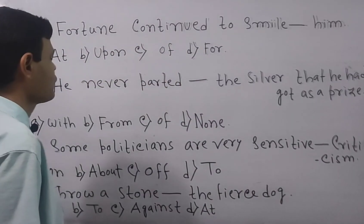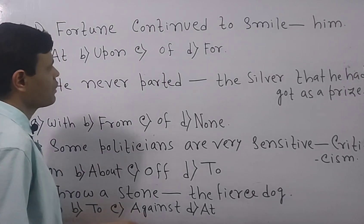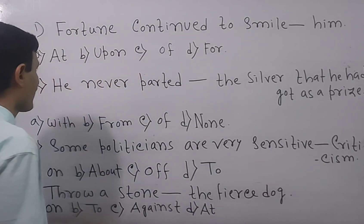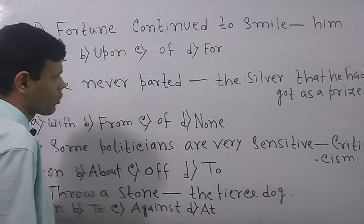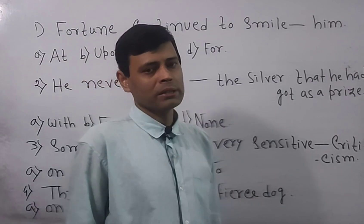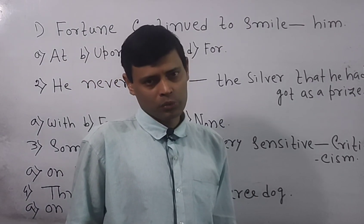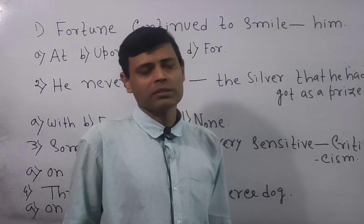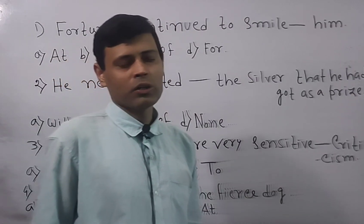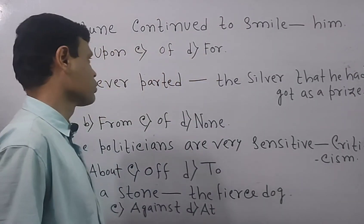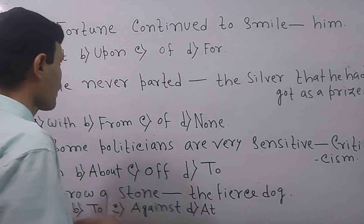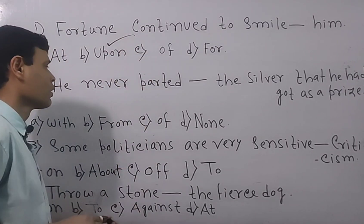So the first question is fortune continues to smile, here is the blank, dash him. Options are at, upon, of, for. So whenever the word is smile, you need to place the preposition on or upon. It is not like placing some other preposition like over or above. It's a part of appropriate prepositions in English. So out of the four options at, upon, of, for, upon will be the exact answer.